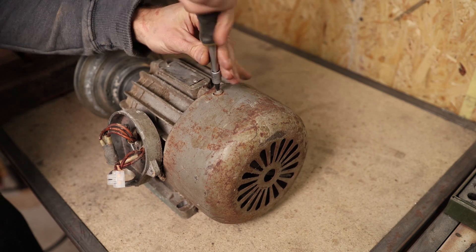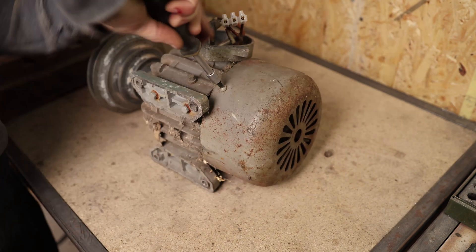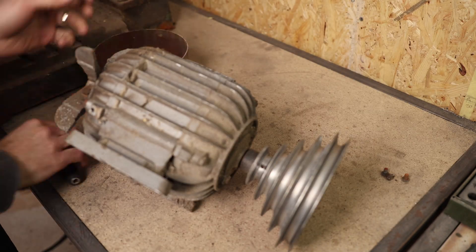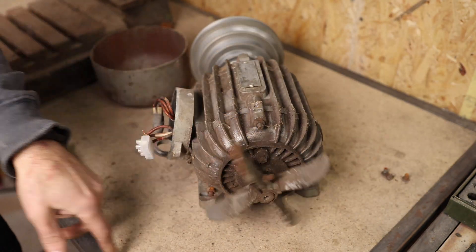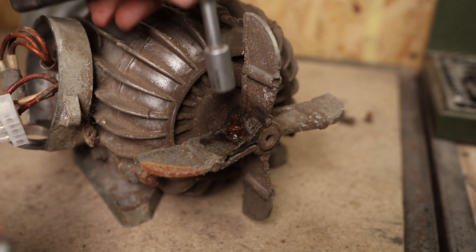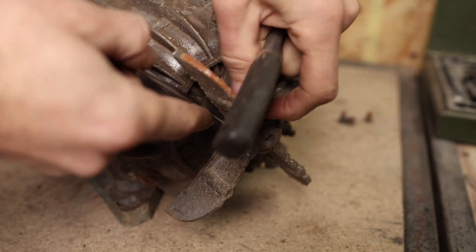I want to change the bearings for the motor and paint it. For that I need to take everything apart. Now the bolts are rusted, so I use some penetrating oil to loosen them more easily.